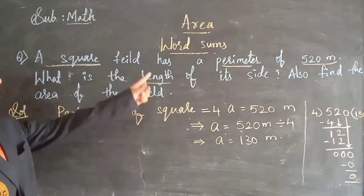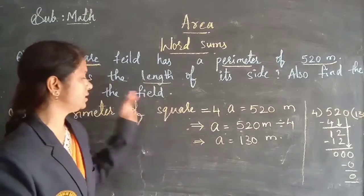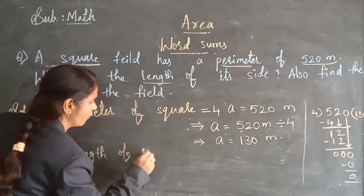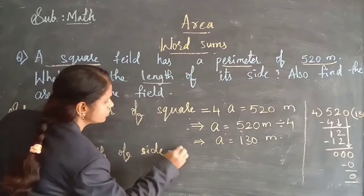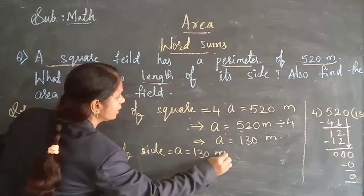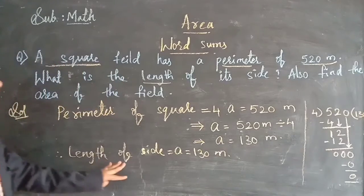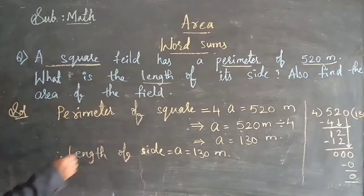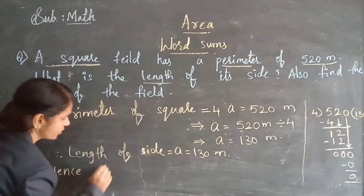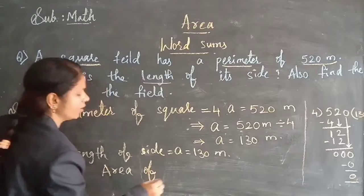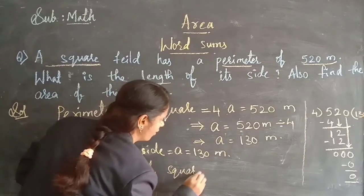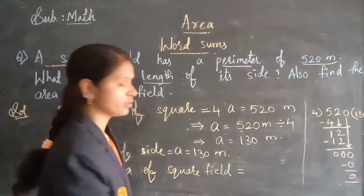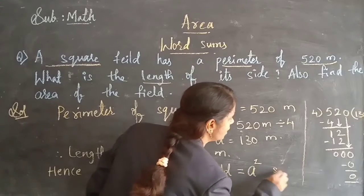Therefore, the length of the side A equals 130 meters. From this side value, we can also find the area. Area of the same square field — what is the formula? Area of a square is A squared square units.